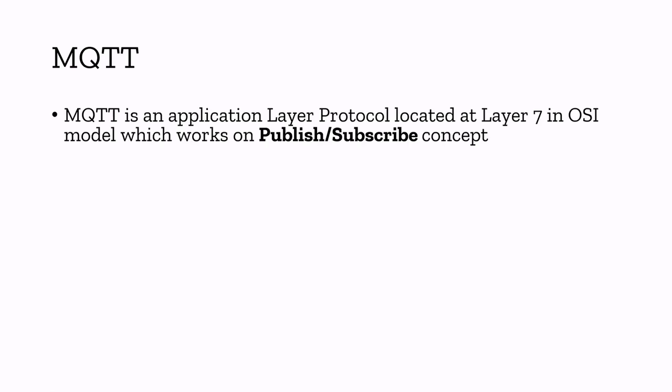Now let's talk about MQTT. MQTT stands for Message Queuing Telemetry Transport. I can strongly say this is one of the trendy protocols used by a lot of companies or developers around the world for IoT-based applications. MQTT is an application layer protocol similar to HTTP and WebSocket located at layer 7 in OSI model, which works on a publish-subscribe concept. In WebSocket and HTTP we call it request-response, but here it is a publish-subscribe concept. It runs on top of TCP/IP, similar to HTTP and WebSocket.